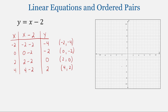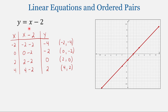Graphing these four points — (−2, −4), (0, −2), (2, 0), and (4, 2) — and connecting those dots, we get our line. This is the graph of the linear equation y = x − 2. Any value for x that you plug into this equation — any integer, fraction, or decimal — is going to give you a value for y, creating an ordered pair that falls somewhere on this line.